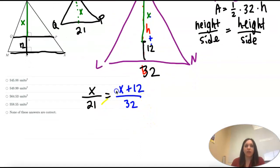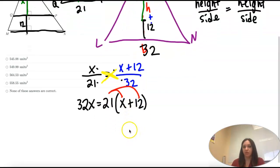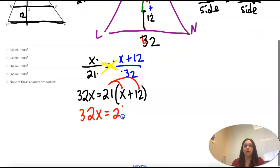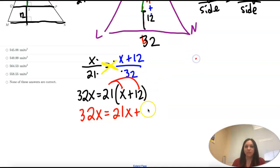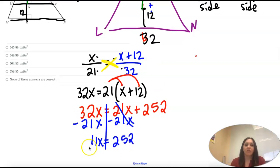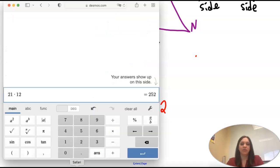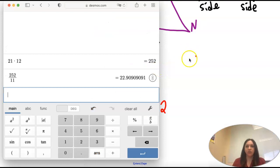So now we're going to cross-multiply like we did before. So X times 32 is 32X. And then I have 21 times X plus 12. So I have to make sure that I'm multiplying the 21 by both of those terms. So I'm going to distribute. I'm going to have 21X. And then 21 times 12 is a big number. It's 252. And we're going to just keep solving. So minus 21X on both sides. Because I'm trying to get X by itself. That's my goal. So that leaves me with 11X equals 252. And then we're going to divide both sides by 11.